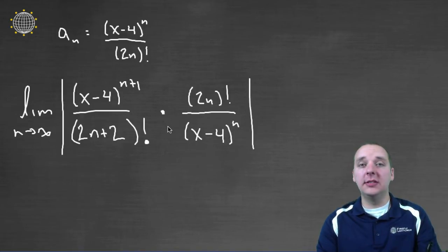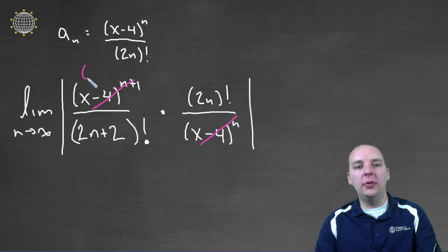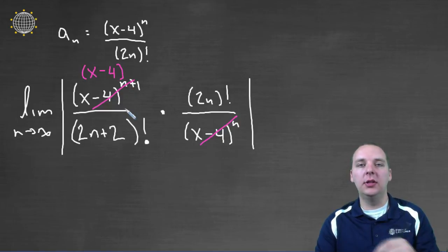This almost always simplifies a pretty fair amount. For example, the x minus four to the n plus one, divided by x minus four to the n, you have one more factor of x minus four in the numerator than you do in the denominator, so you'll have an x minus four.